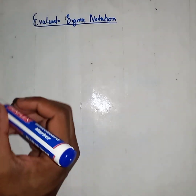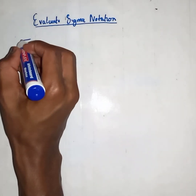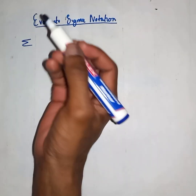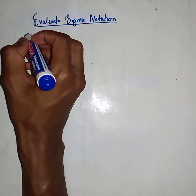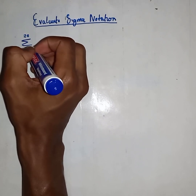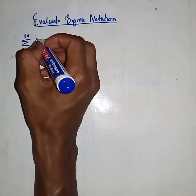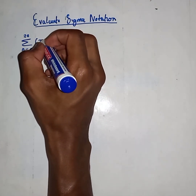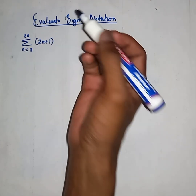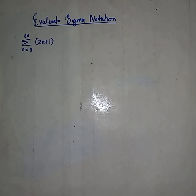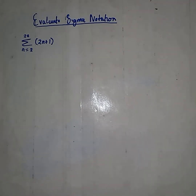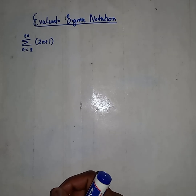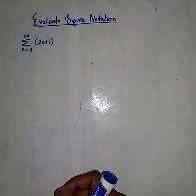Suppose if I were to give you this sigma notation of 20, somewhere here, n squared to 2, with a general formula of 2n plus 1. Then I ask you to evaluate the following given sigma notation. How are you going to do that?